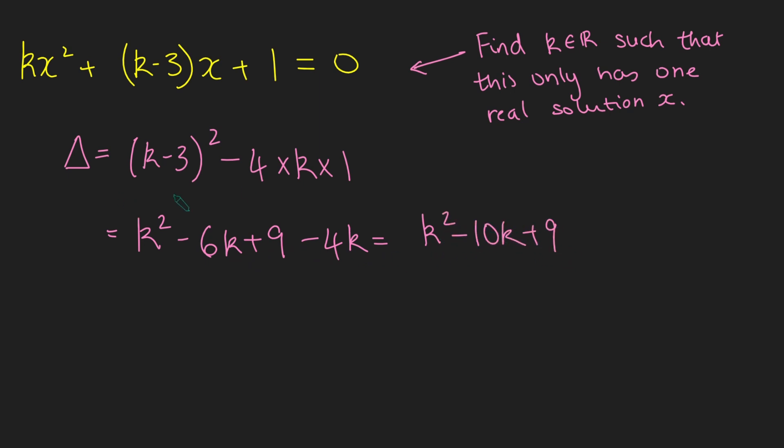which is k² - 10k + 9. And this is the discriminant, so we're going to set this equal to 0. Now this is quite a nice quadratic, we can just write this as (k-9)(k-1) = 0. And so therefore k = 1 or k = 9.